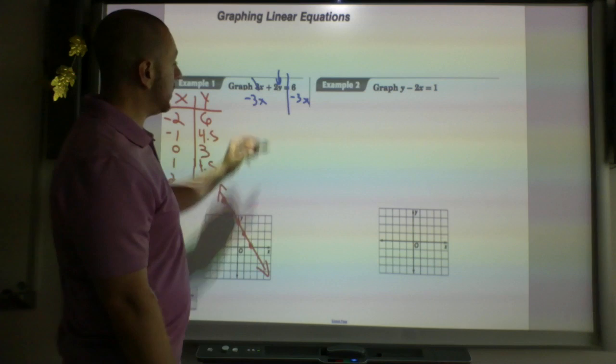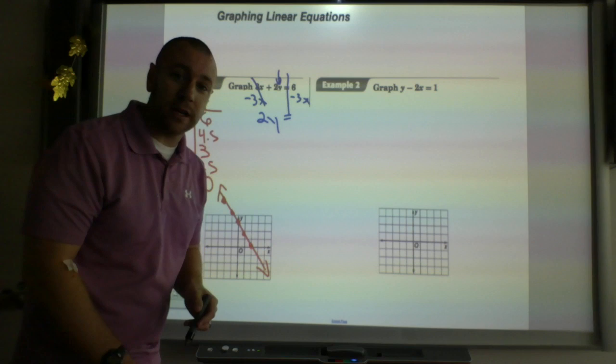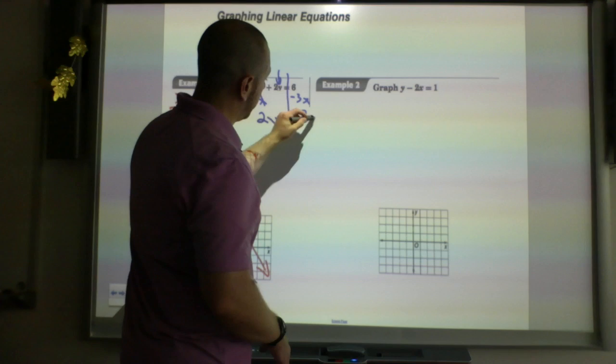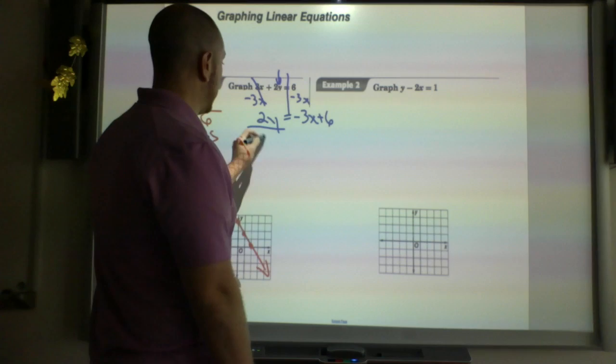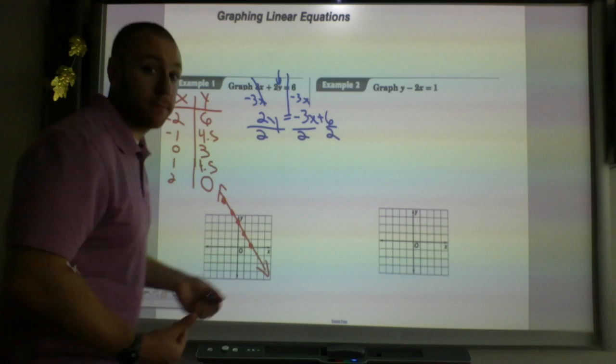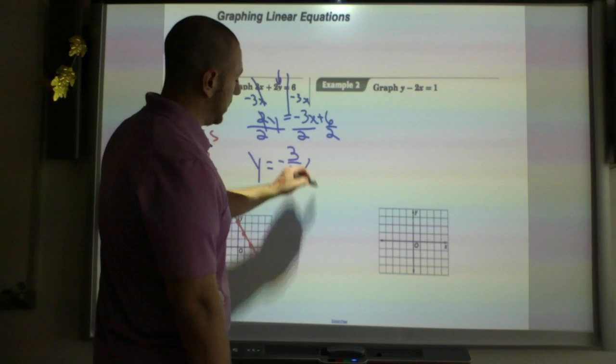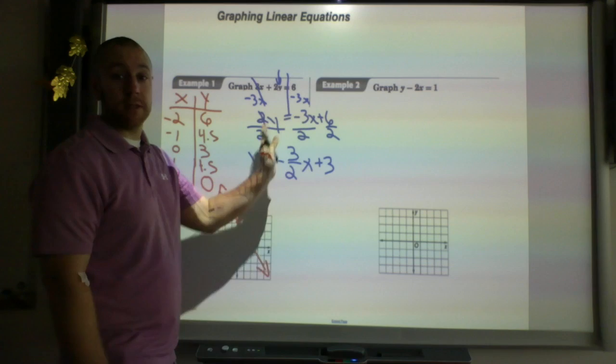These cancel out, I'm left with 2y equals, and here's the trick, I'm going to reverse it so it's a little bit easier in the future: negative 3x plus 6, because usually it's y equals mx, so the x is always first after the equal sign. Now when I divide by 2, remember I have to divide everything by 2, so each individual thing: y equals negative 3 over 2x plus 3.